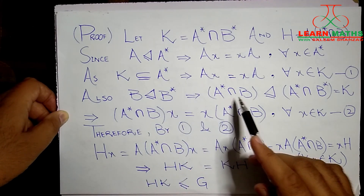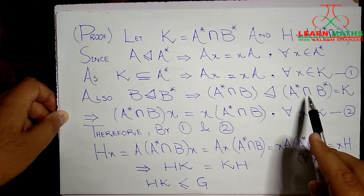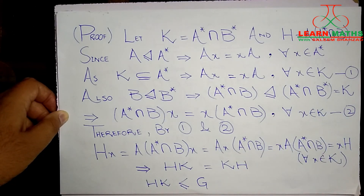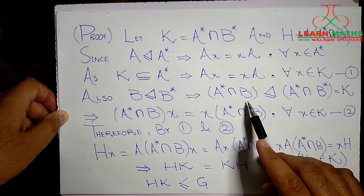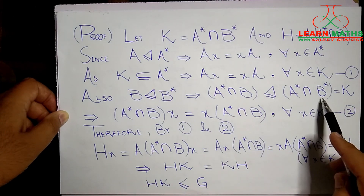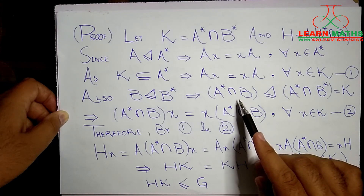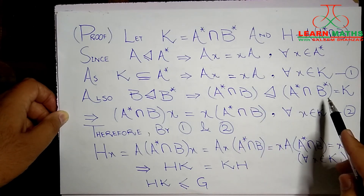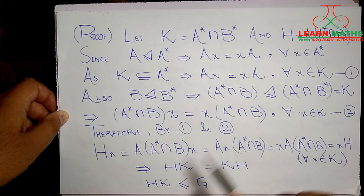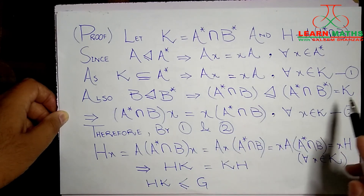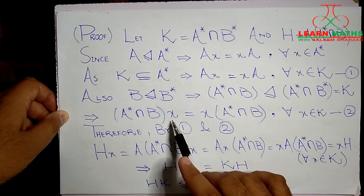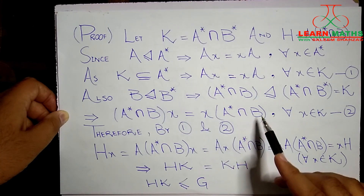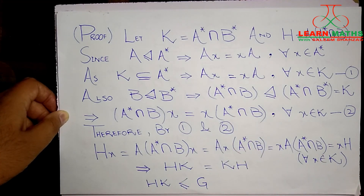Also, B is a normal subgroup of B*, so (A* ∩ B) is a normal subgroup of (A* ∩ B*), which equals K. We know this because A* is normal in itself and B is normal in B*, so the intersection of these two is normal in the intersection of those two, which is K. Therefore, (A* ∩ B)·X = X·(A* ∩ B) for all X in K. Let us call this Result 2.